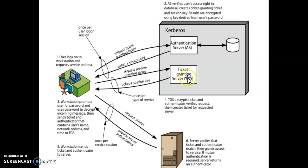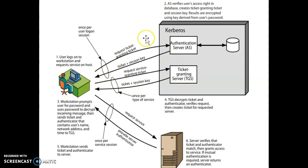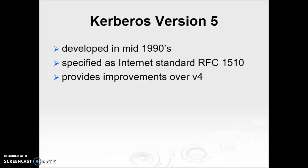In this diagram, the user logs on to the workstation and requests services from the Kerberos server — which can be any kind of service like FTP, Telnet, or Windows 2000 server services. The user requests a Ticket Granting Ticket (TGT), then a Service Granting Ticket. Kerberos acts as a trusted third party called the KDC, or Key Distribution Center. This dialogue — requesting the TGT, then the service ticket, then accessing the service — is carried out per service session. Kerberos version 5 was developed in the mid-1990s.